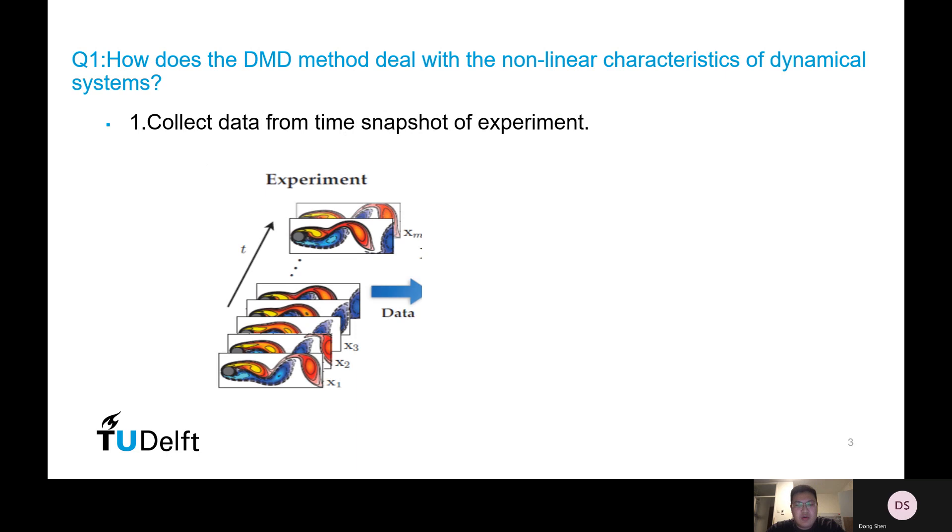First, let's focus on question one: How does DMD deal with nonlinear characteristics? To understand that, we must have a look at the procedure of DMD method. As we mentioned, DMD is a data-driven method. So for the very first step, we will collect data from a time snapshot of our experiment.